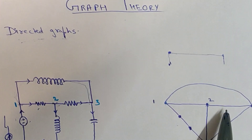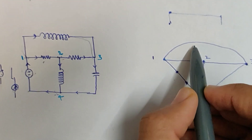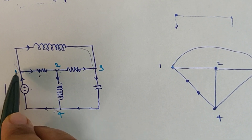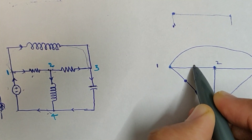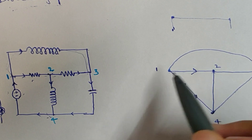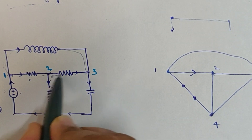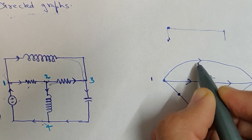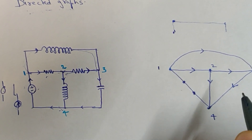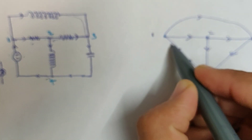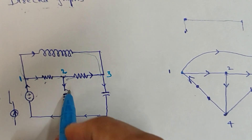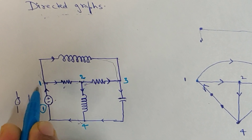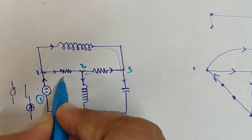For drawing the directed graph, we represent the current direction by arrows. Between one and two the current flows from one to two, so we put an arrow there. Without arrows it is a normal graph; with arrows it is a directed graph. Between two and three we put an arrow, and similarly arrows are added to the remaining branches according to the given current directions. We also name the branches: branch one, branch two, and so on.